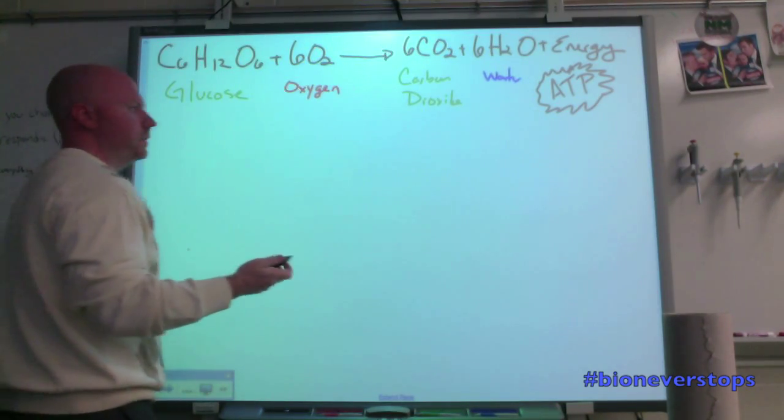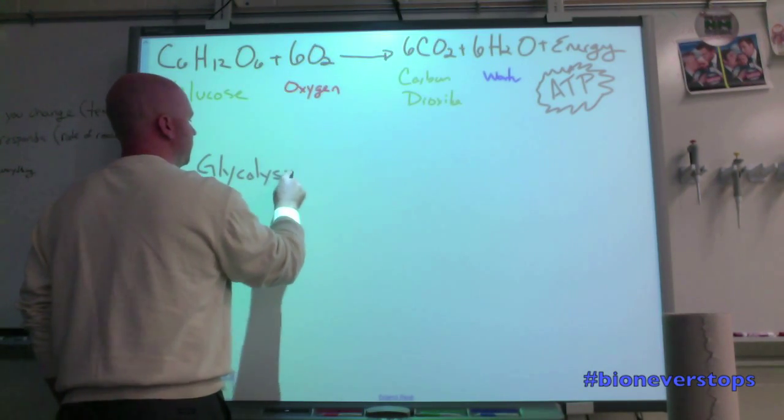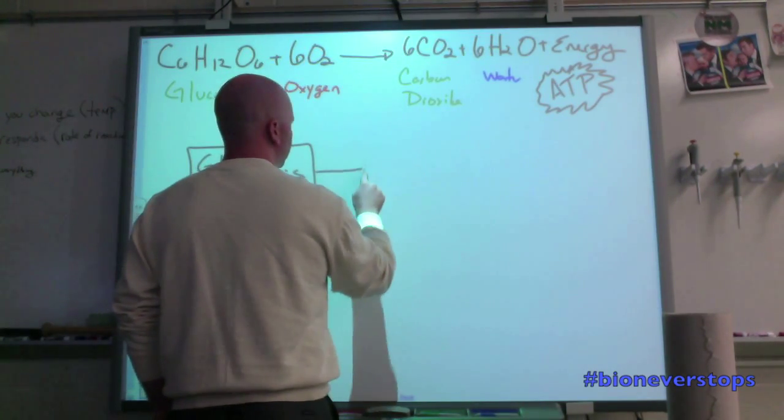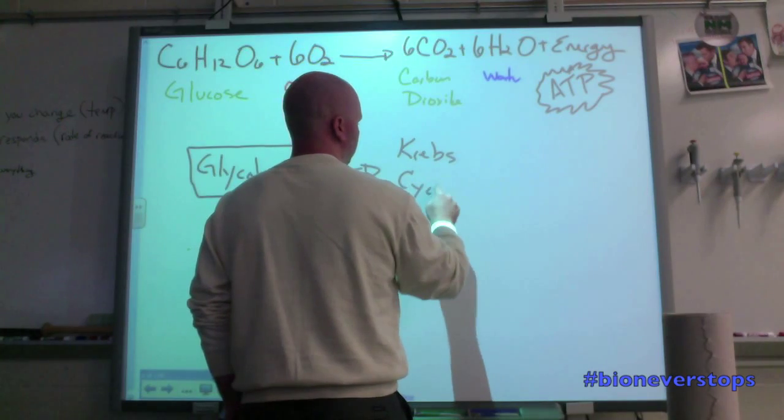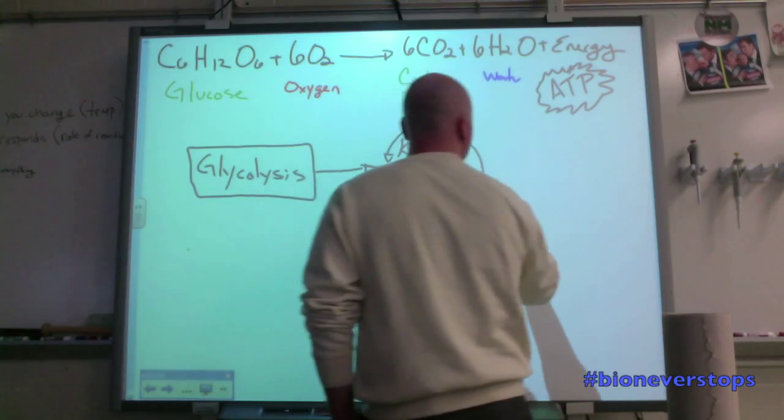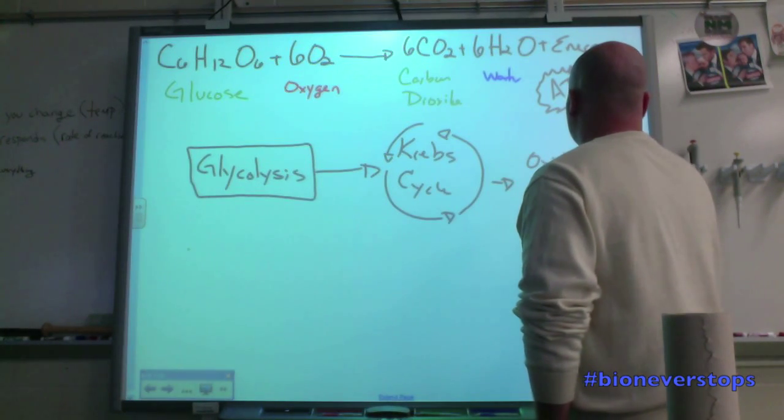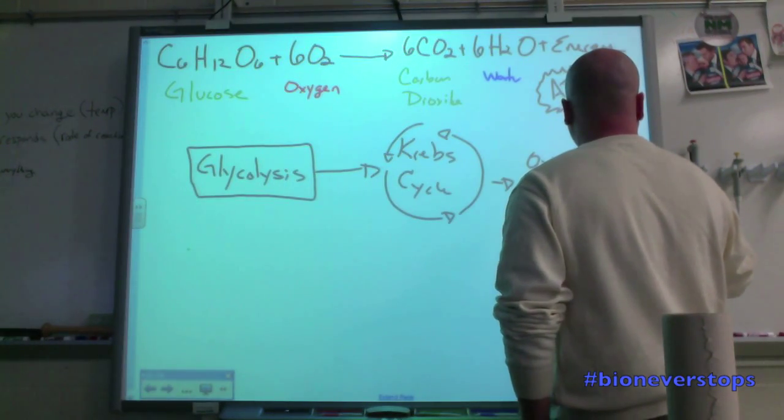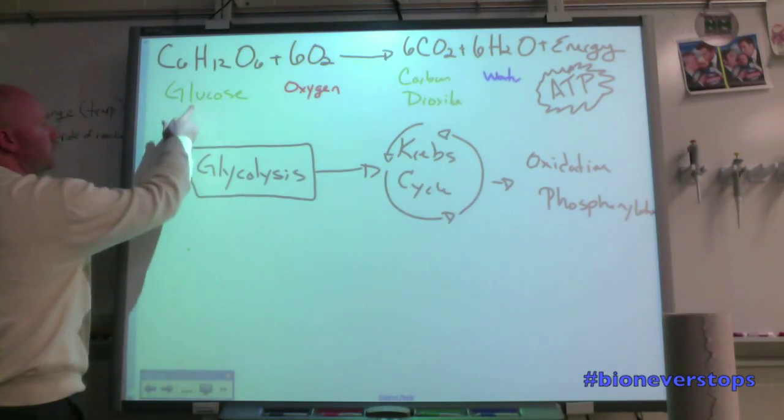There's really three steps to the process. The first step of cell respiration is called glycolysis. Then after glycolysis comes the Krebs cycle. And after the Krebs cycle is something that we call oxidative phosphorylation. So glucose needs to go into glycolysis.